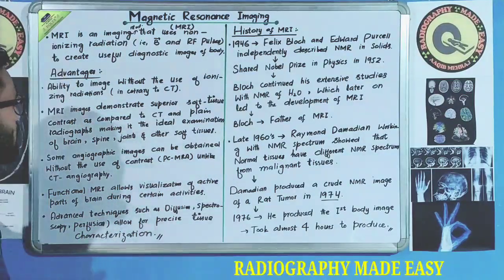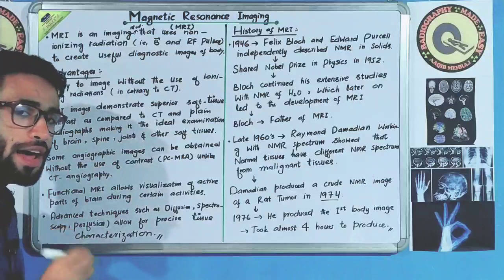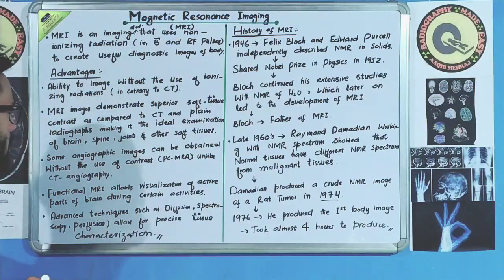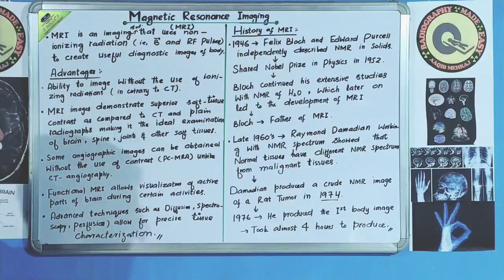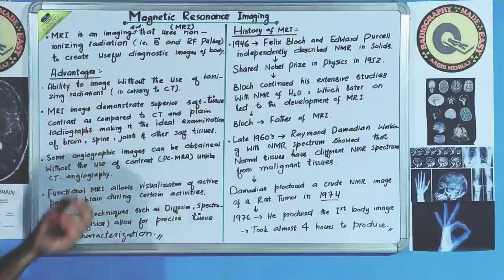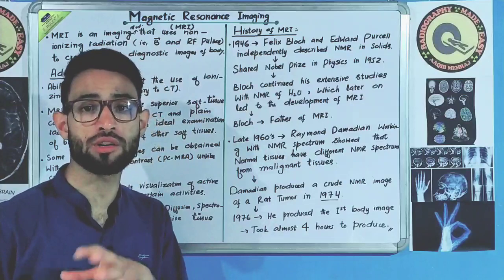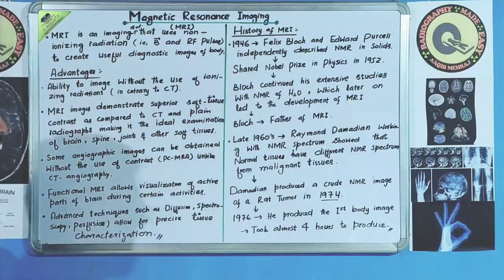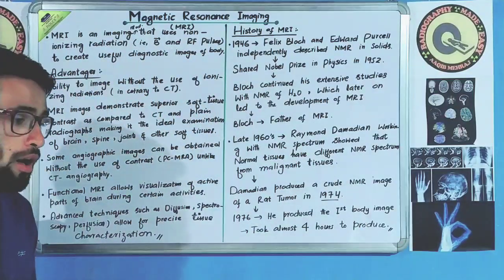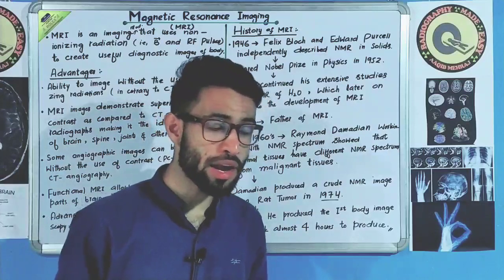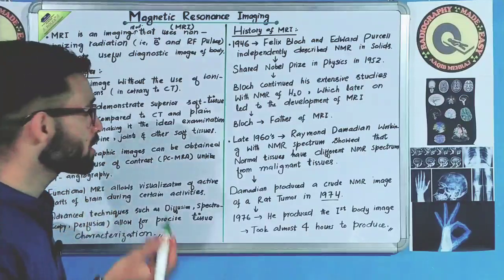The second advantage of MRI is that MRI images demonstrate superior soft tissue contrast as compared to CT and plain radiographs, making it the ideal examination of the brain, spine, joints, and other soft tissues.